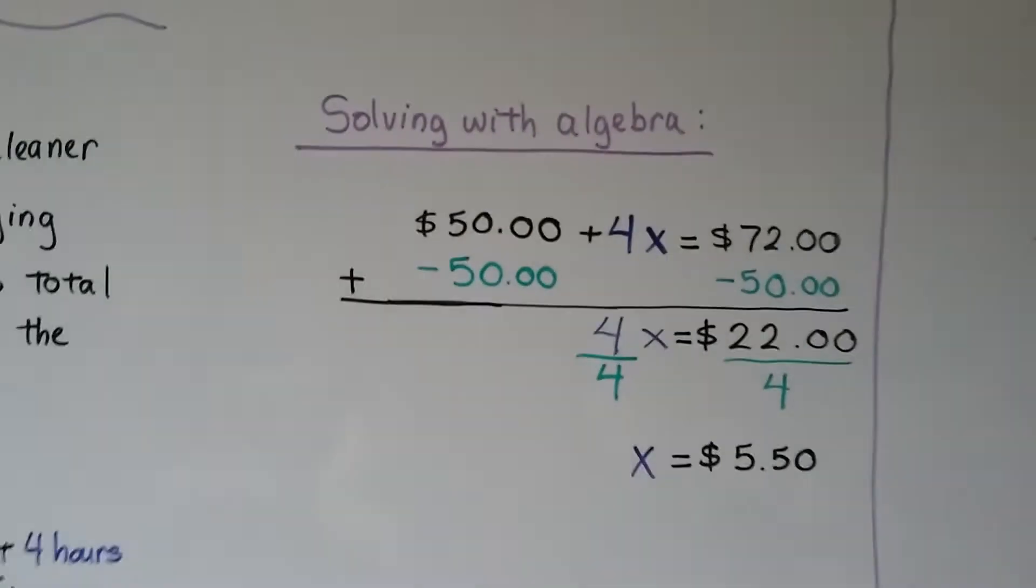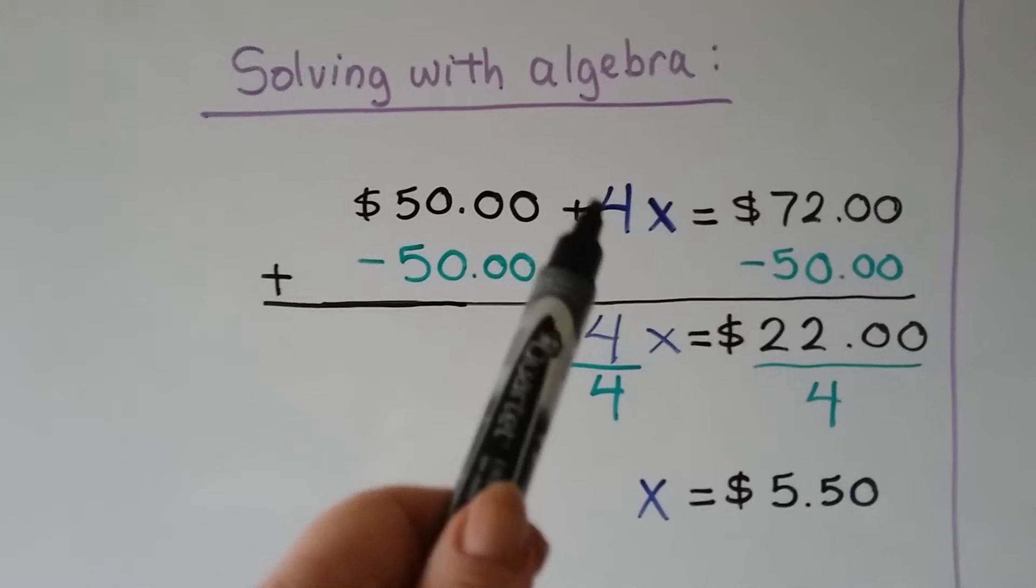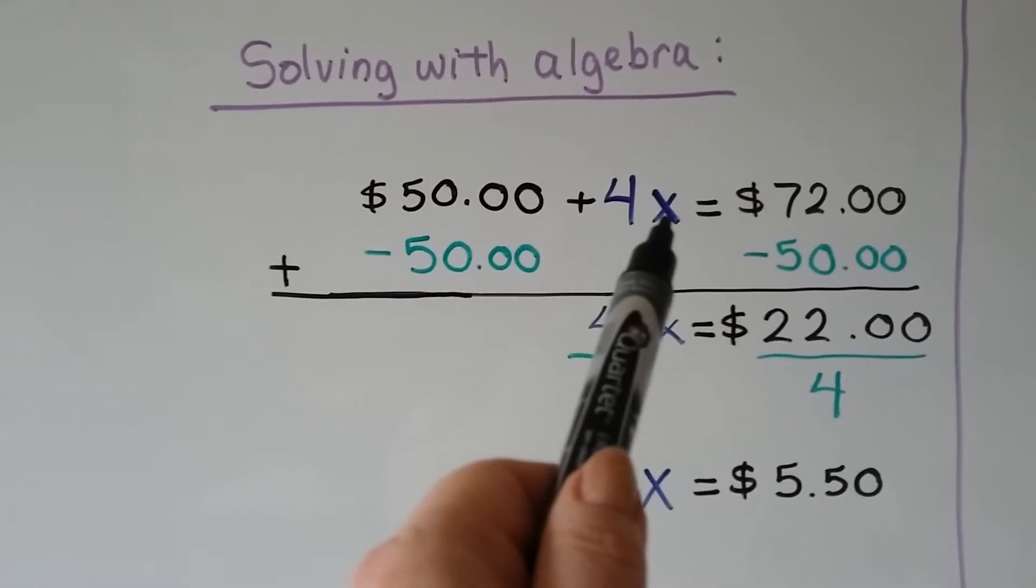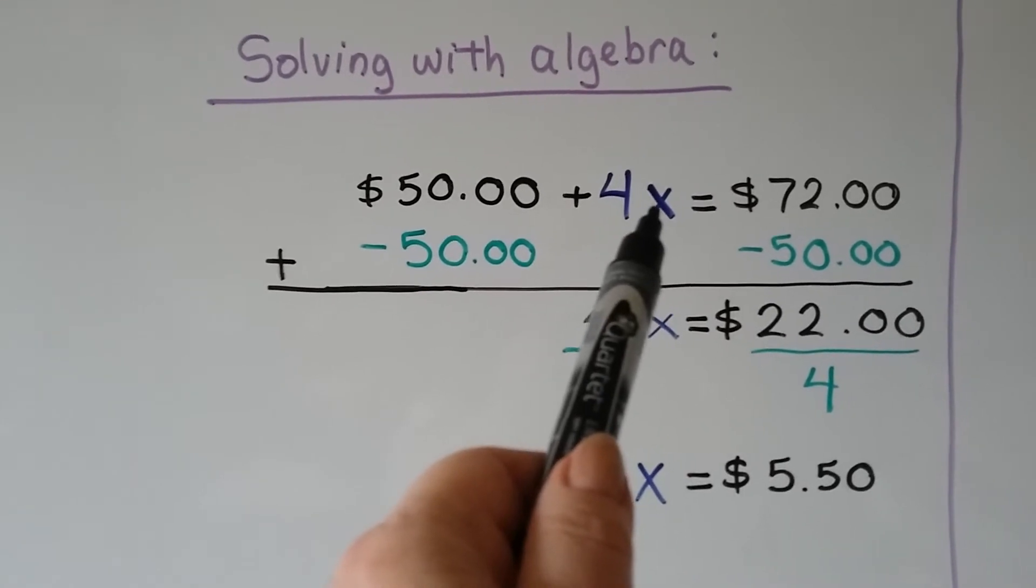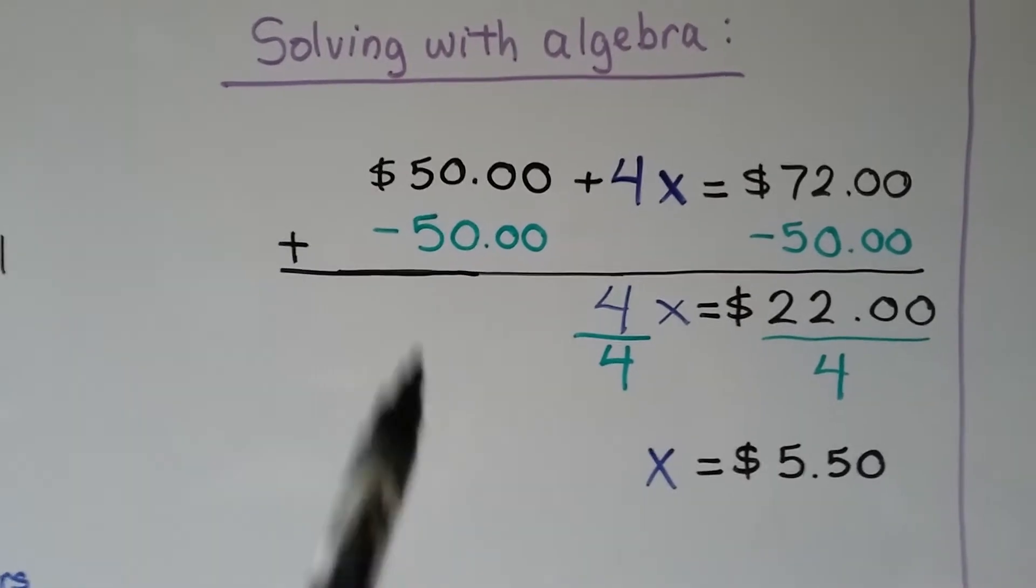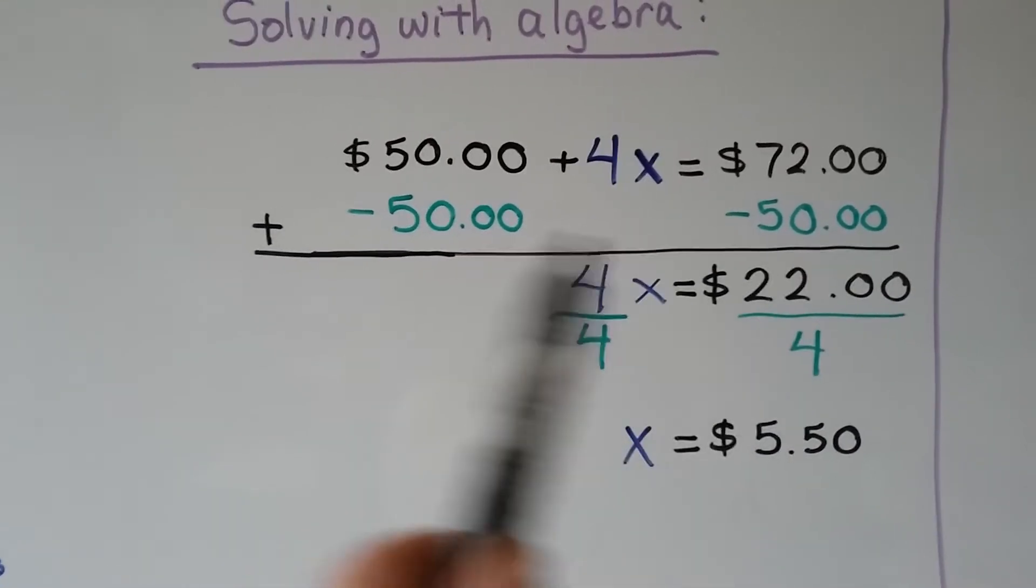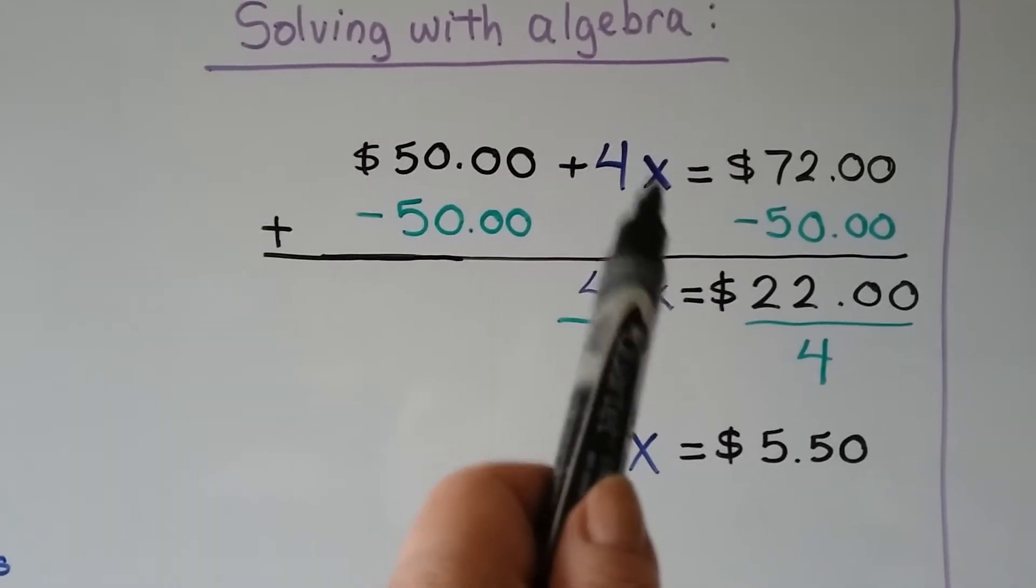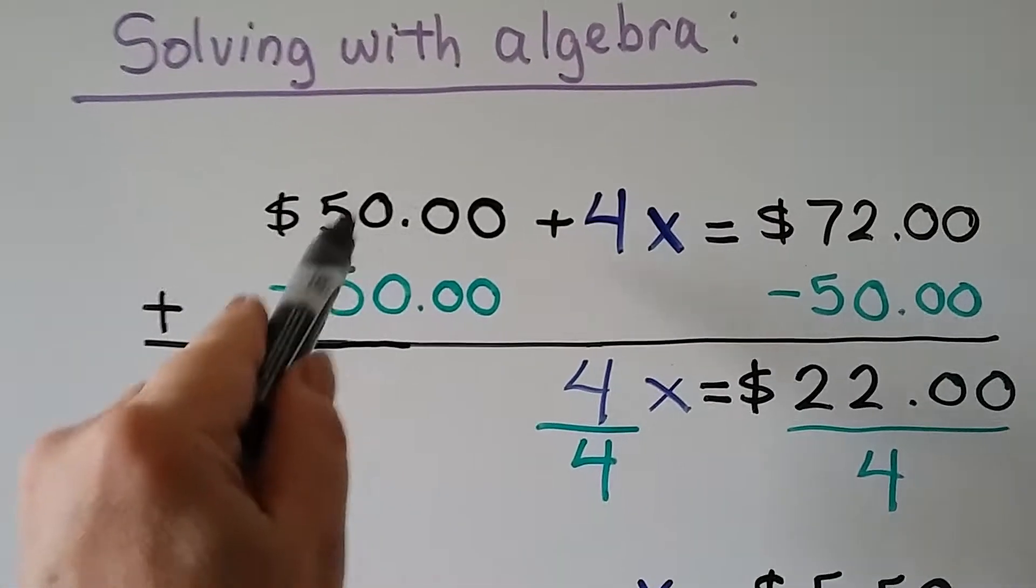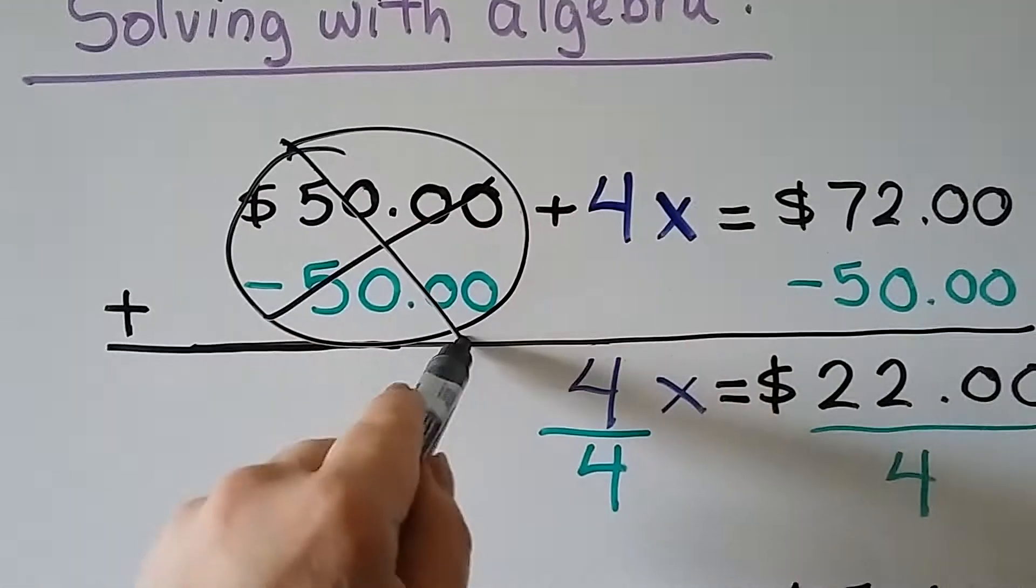So here's solving it with algebra. We've got the $50 deposit. He rented it for four hours times some amount per hour. We don't know. So that's going to be our x. That's going to be our variable. And it's going to total $72. We add a negative $50 to each side of the equation because we want to isolate this x all by itself. This positive $50 and this negative $50 are going to create a zero pair. So now it's gone.